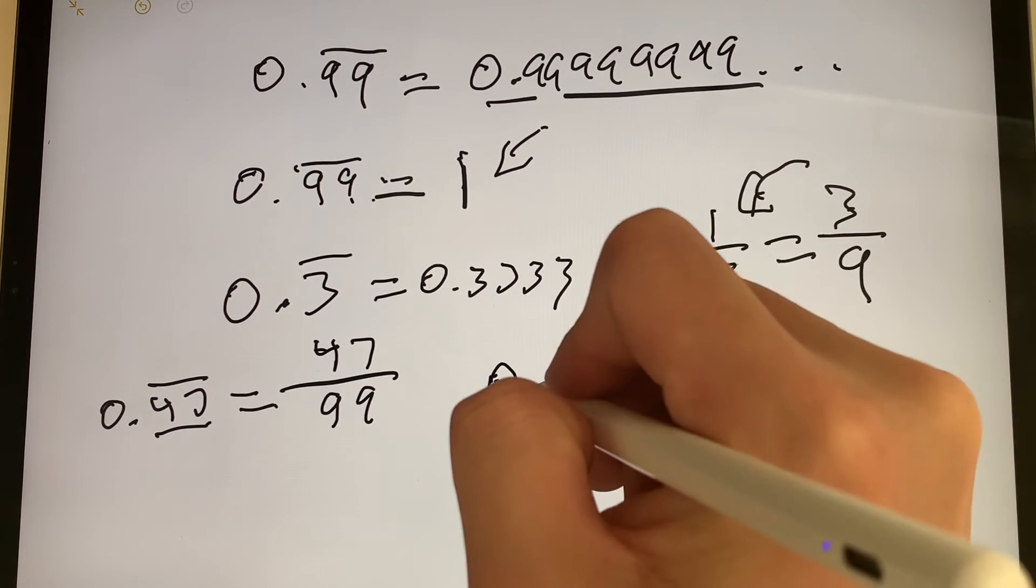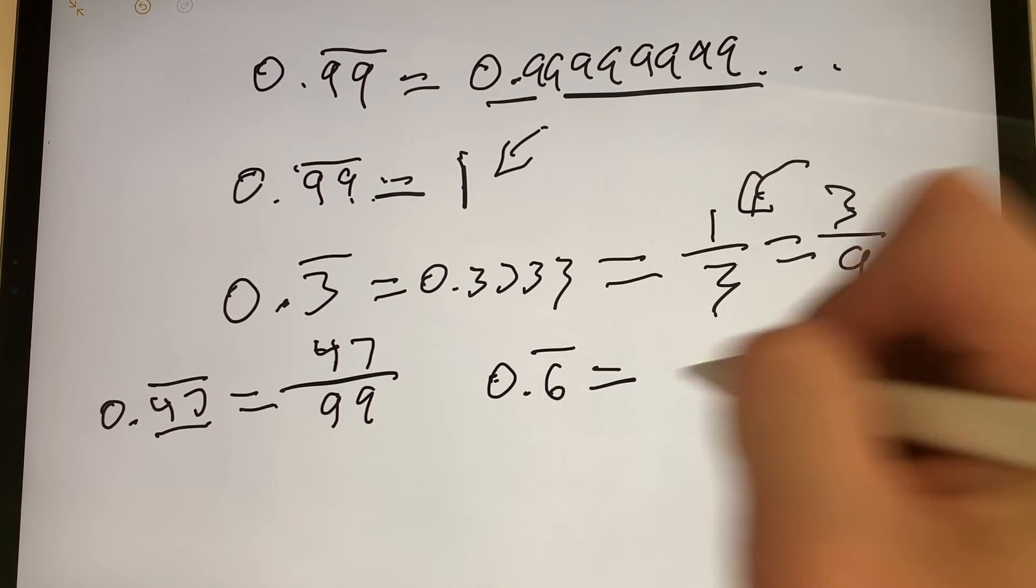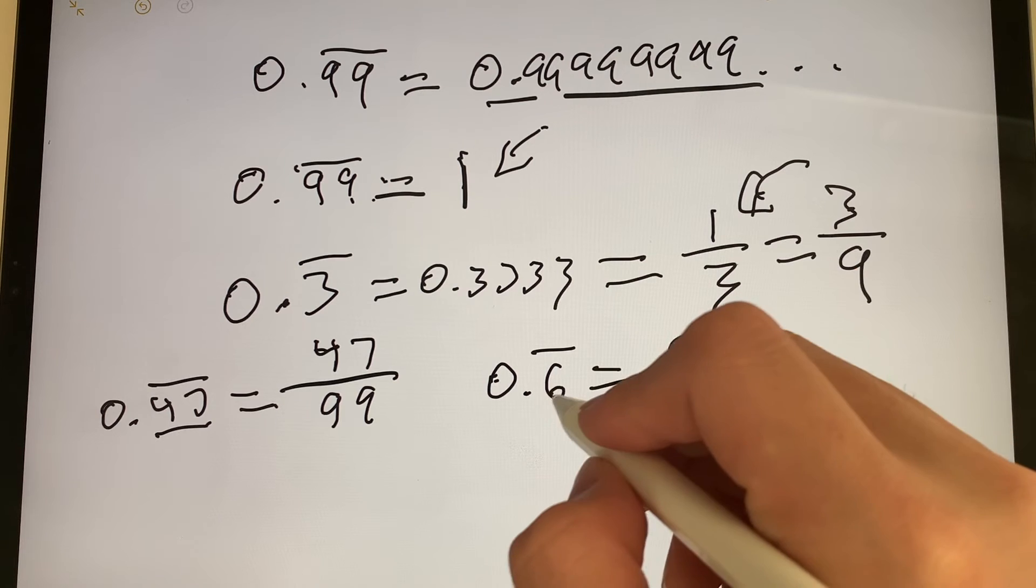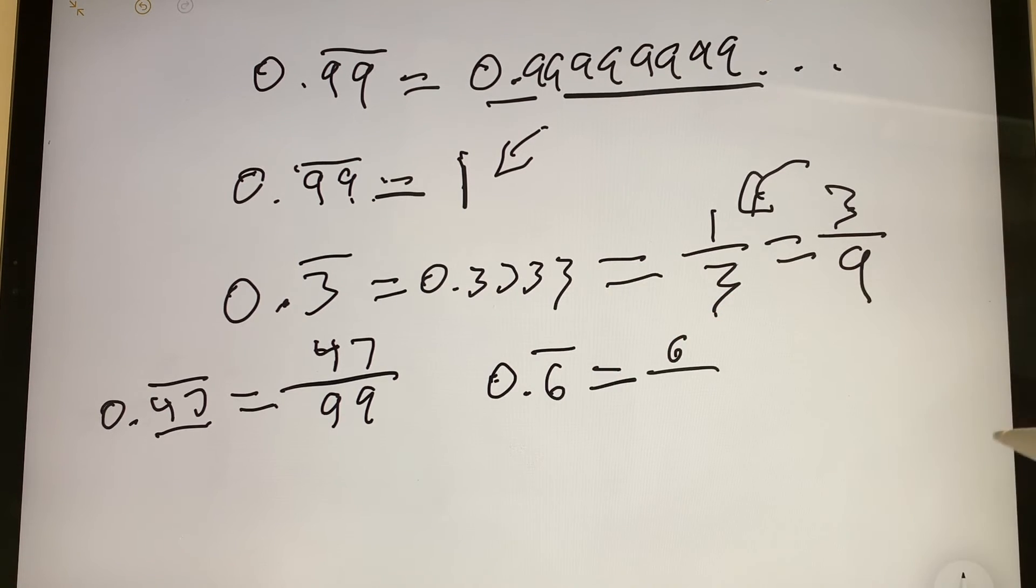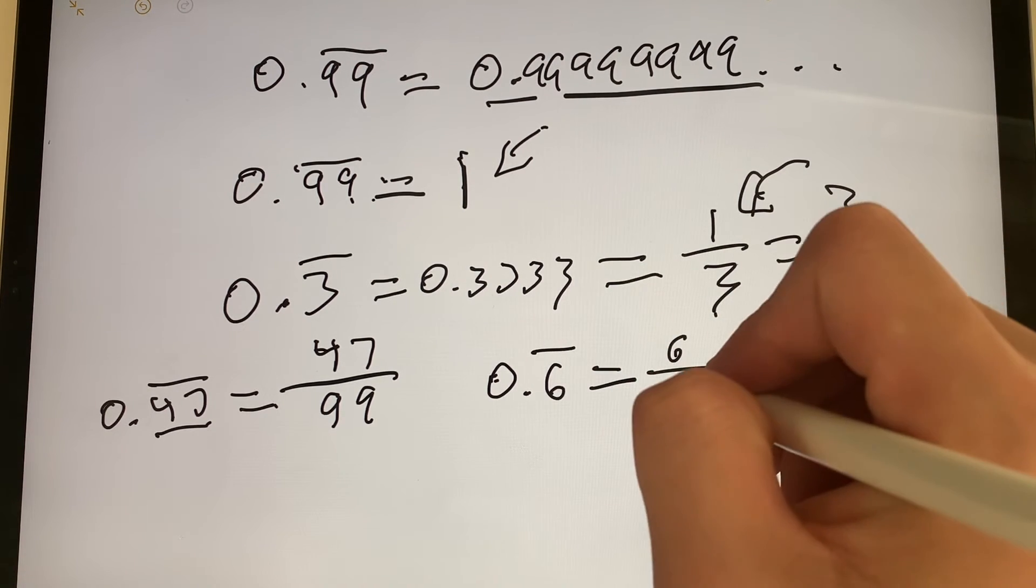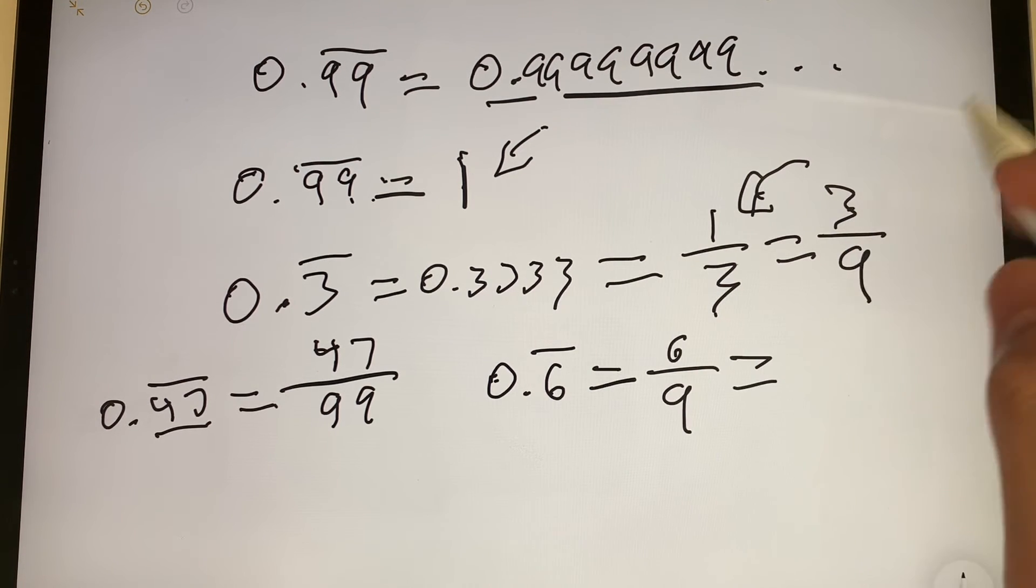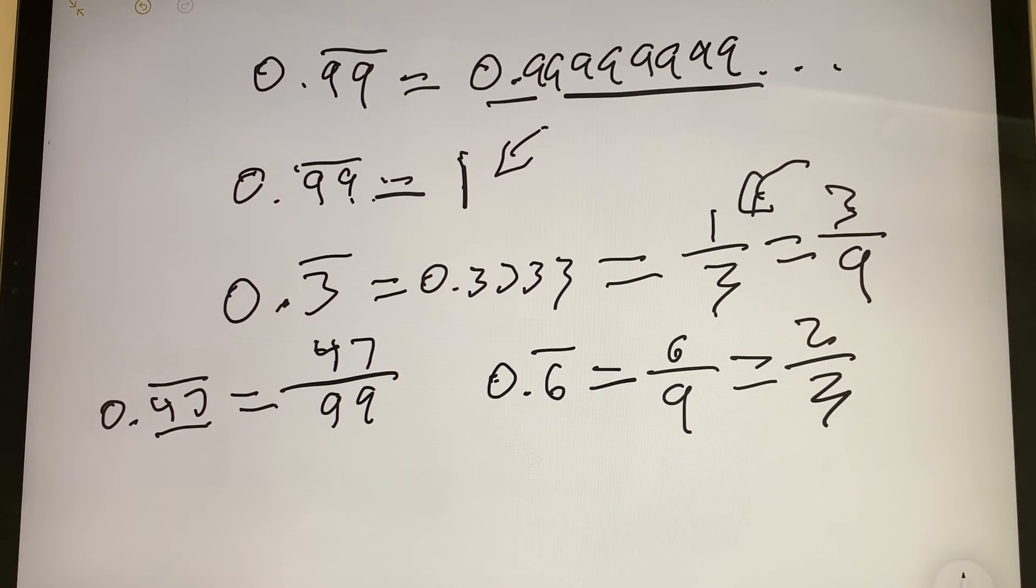So let's try another example. 0.6 repeating. This is equal to 6 over... How many numbers? There's only 1. Well, you only need 1 nine. So it's going to be 6 over 9, which is equivalent to... If you divide the top and bottom by 3, you should get 2/3.